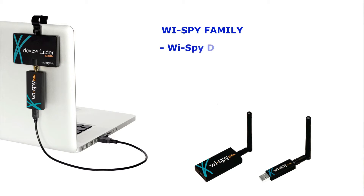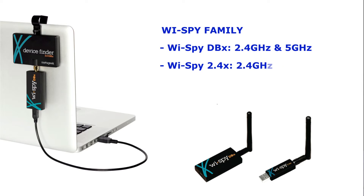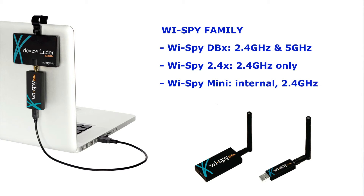Our Wi-Fi family has three versions: the DBX, which does both 2.4 and 5 gigahertz; the Wi-Fi 2.4X, which is a 2.4 gigahertz-only application; and the Wi-Fi Mini, which is an internal antenna device that also does 2.4 gigahertz. If you think you're ever going to be putting in a 5 gigahertz network or need to be monitoring it, just go for the DBX — get all you need right off the bat.